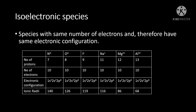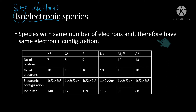What are isoelectronic species? 'Iso' refers to same, and 'electronic' refers to electrons. Therefore, isoelectronic species refer to species with the same number of electrons, and therefore will have the same electronic configuration.